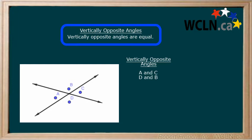Because they are vertically opposite, we can also write that angle A equals angle C, and that angle D equals angle B.